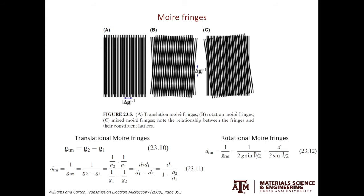Looking at the translational moiré fringes first, assume we have two sets of lattice planes laying on top of each other. The d spacings are d1 and d2. In reciprocal space, there will be g1 and g2, where g is equal to 1 over d. The g value for the moiré fringes is simply equal to g2 minus g1. In real space, you can substitute d by 1 over g and get the expression. What this tells you is, if you know the d spacing for one set of planes and the spacing of the moiré fringes, you can easily calculate the d spacing of the second set of planes.